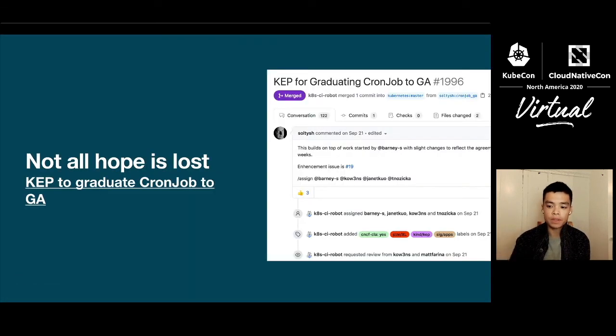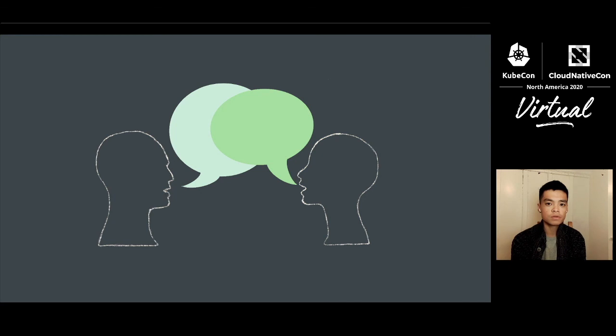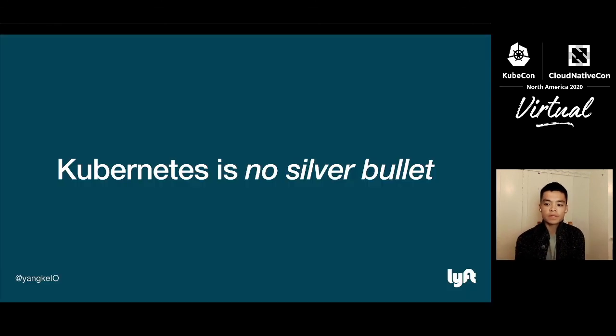So to conclude, not all hope is lost. Recently, a KEP was merged for graduating cronjobs to GA. And it's really exciting to see some progress being made in this area. And I especially like how this time there's a lot more concern around observability and performance scaling of cronjobs. So kudos to the Kubernetes team. And I'm definitely looking forward to playing around with the new cronjob API when it comes out. But all things Kubernetes aside, talk to your users, have real conversations with engineers at your company, and ask them what they really need from your infrastructure. And lastly, Kubernetes is no silver bullet. But don't be afraid to get your hands dirty anyways, and try to bring it closer to something that's usable in the real world.